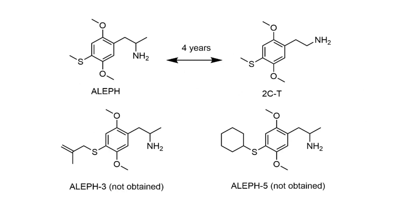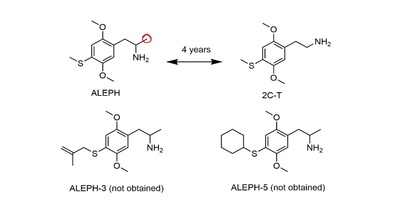Interestingly, Aleph and 2CT were both synthesized at about the same time, but there was actually a lag of four years between the first trials of Aleph and the first trials of 2CT. Initially, 2CT was considered discouraging because of its lower potency — the amphetamine derivatives tend to be a bit more potent. The issue with the Aleph series, which eventually led to its abandonment, was the inconsistency of dose response depending on human subjects, with effects varying widely from person to person.